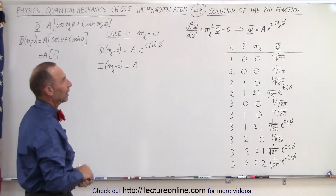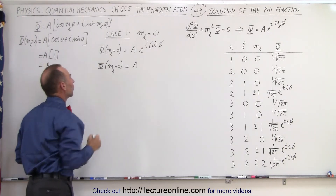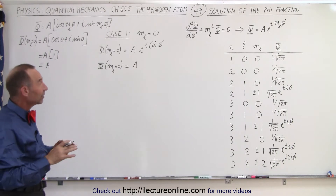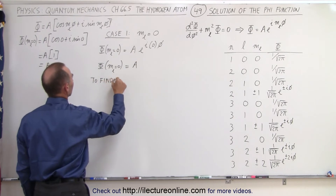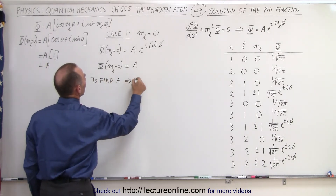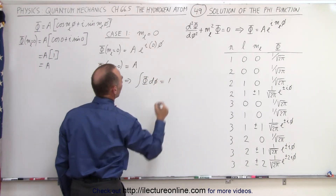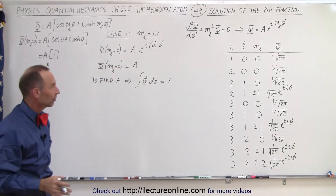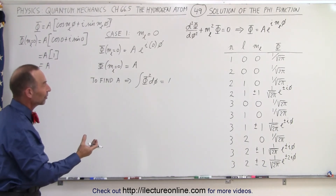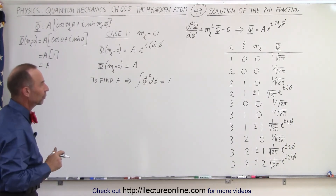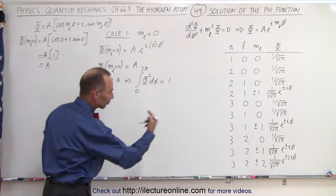So now, how do we get the value for a from that equation? To find a, we normalize by squaring the wave function and integrating, setting it equal to one. We need to integrate this from zero to two pi to go all the way around the circle in the xy plane.